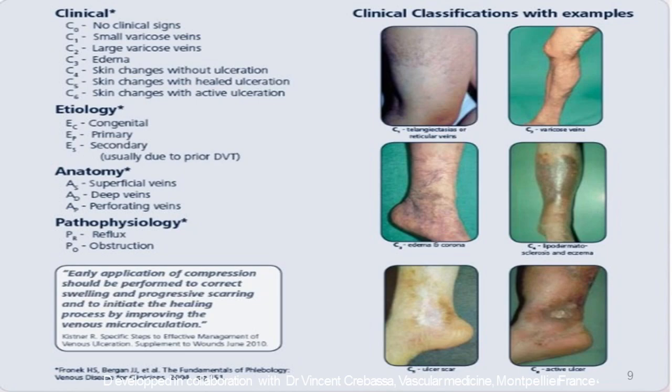Varicose veins have been classified into different stages. In all the stages, it can be symptomatic or asymptomatic. Clinically, we divide them as: C0 — no clinical signs; C1 — small varicose vein or telangiectasia; C2 — large veins; C3 — associated with edema; C4 — associated with skin changes but no ulcerations; C5 — with healed ulceration; or C6 — with chronic active ulcer.